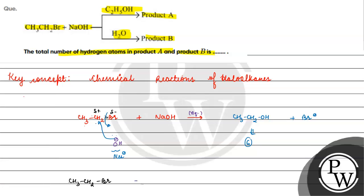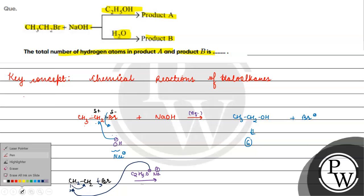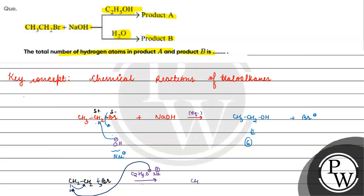How good a base is ethoxide ion? The ethoxide ion will come and extract a hydrogen from here. Electron density will come out, bromide ion will leave, and ethene will form. The number of hydrogens in ethene is 4.